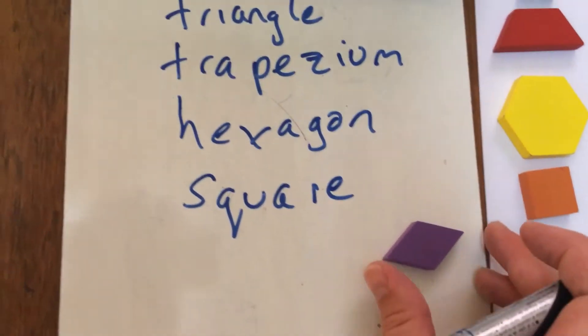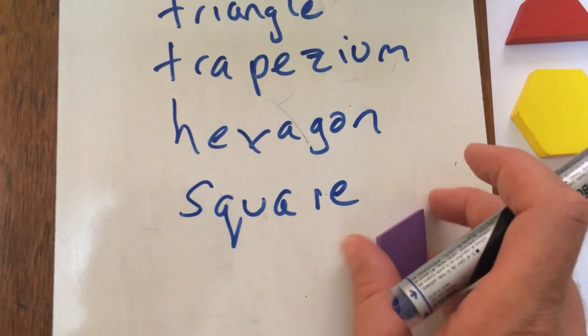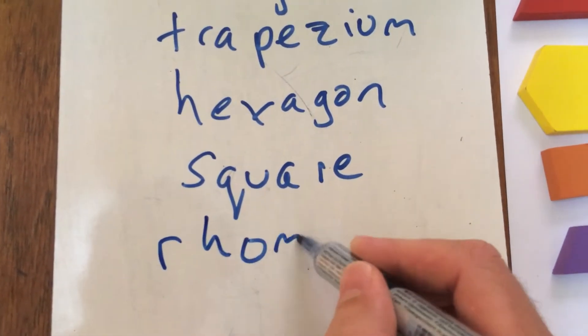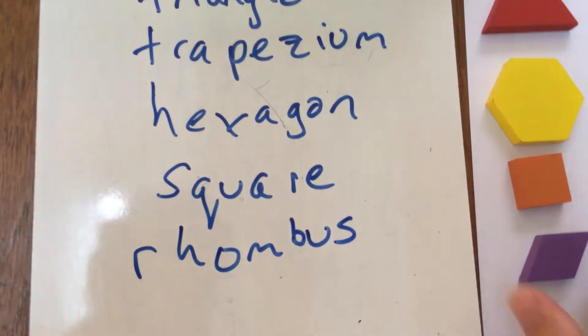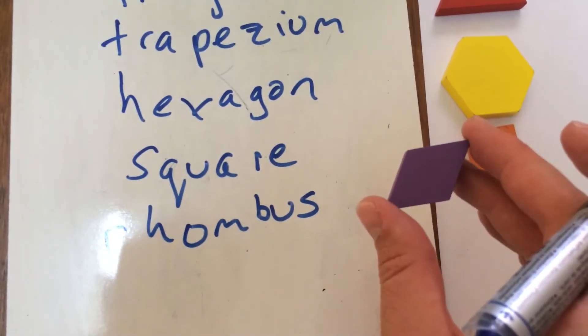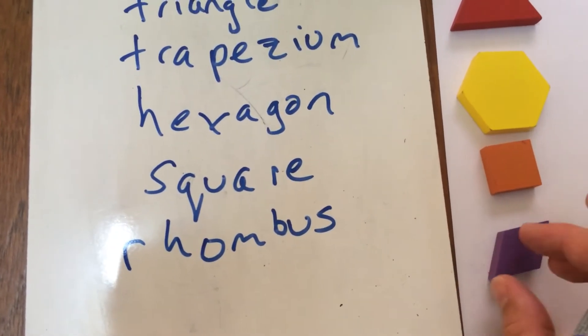Then we've got what primary students might call a diamond, but secondary students will call a rhombus. All the sides are equal—it's like a square being pushed over. It's not quite a parallelogram because the sides are... Sorry, it is a type of parallelogram, but the sides are equal.